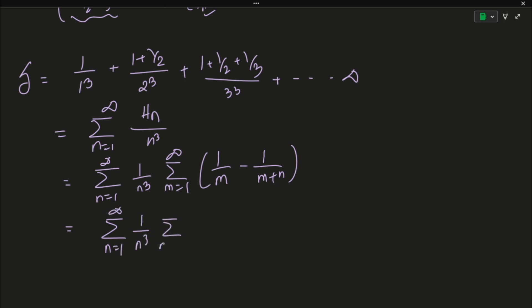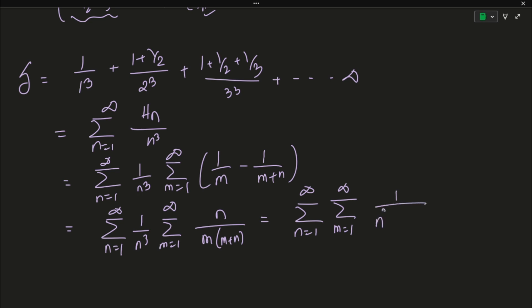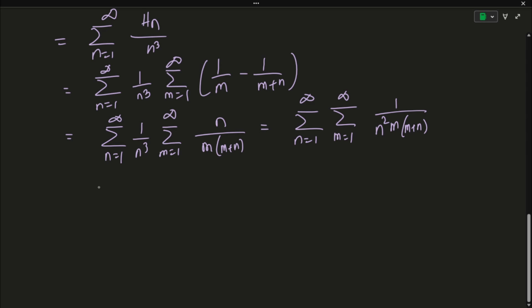Substituting into S, we get the sum over n of (1/n³) times the sum over m of (1/m − 1/(m+n)). Taking the LCM inside gives (m+n−m)/(m·n·(m+n)) = n/(m·n·(m+n)). This simplifies to a double summation: n=1 to infinity, m=1 to infinity of 1/(n² · (m+n)). Noting that both m and n run from 1 to infinity, we can adjust the expression to write S as the double sum of m/(m²·n²·(m+n)).